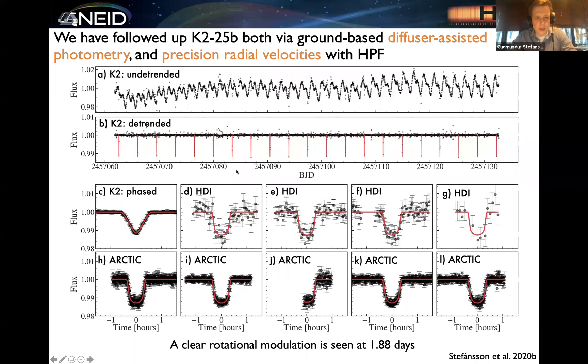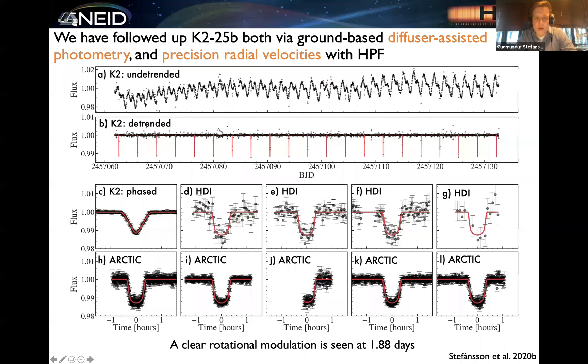To further characterize the planet, we were able to obtain a number of ground-based diffuser-assisted transits of K2-25. I'm showing five different transits observed with the diffuser on the 3.5-meter telescope at Apache Point with the ARCTIC imager, and four different ground-based diffuser-assisted transits with the Half Degree Imager on the 0.9-meter telescope at Kitt Peak. With these additional transits, we were really able to better resolve the shape of the transits and better characterize the orbital parameters of this exciting planet.